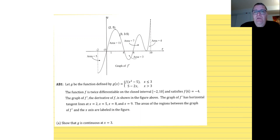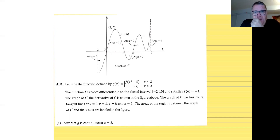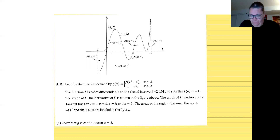We're going to get started. This is problem one, which is supposed to be done in 25 minutes. We have the graph of f prime, and we have g defined as a piecewise function: f of x-squared minus 5 when x is less than or equal to 3. Something to note: that's a composition of functions — f as the outer and x-squared minus 5 as the inner. That might be important for u-substitution or chain rule.